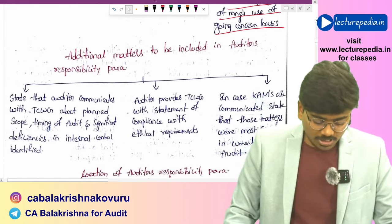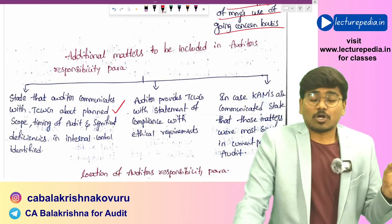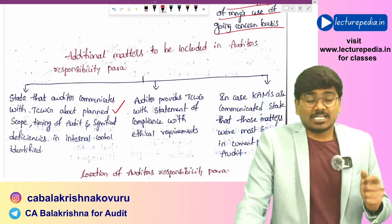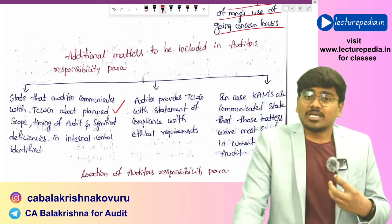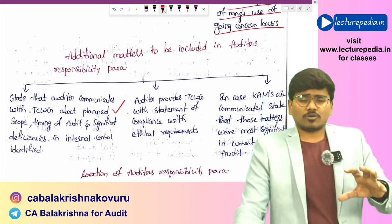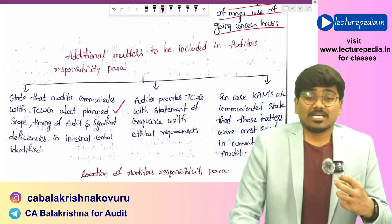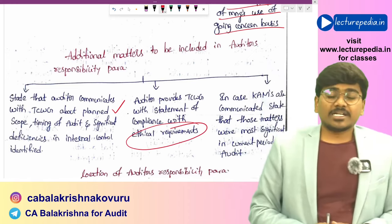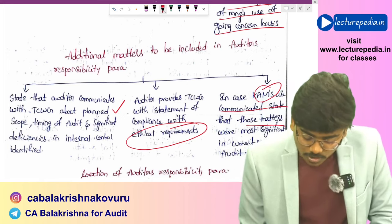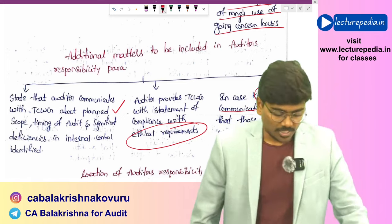There are also other responsibilities of the auditor: communicating with those charged with governance about the scope and timing of the planned audit; communicating any significant deficiencies in internal control to management and those charged with governance; giving a statement that the auditor will comply with all ethical requirements; and in case key audit matters are communicated, stating that those matters were the most significant in the current period audit.